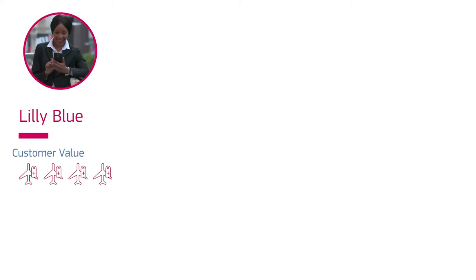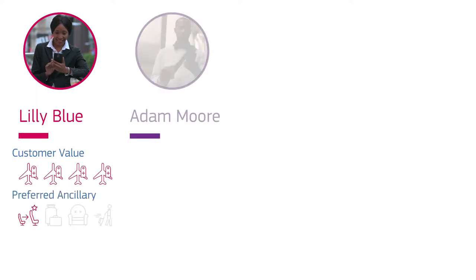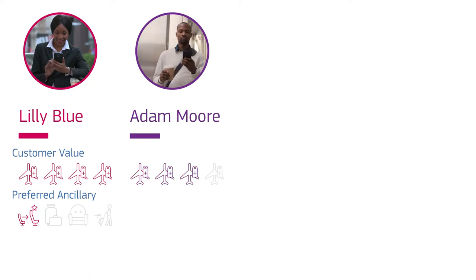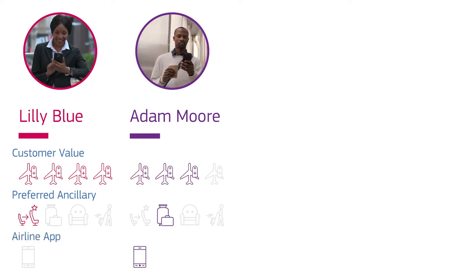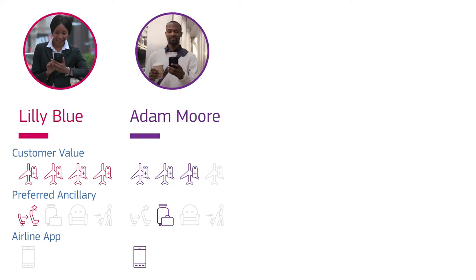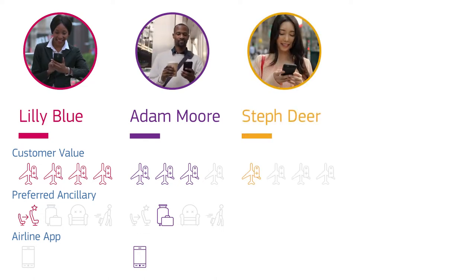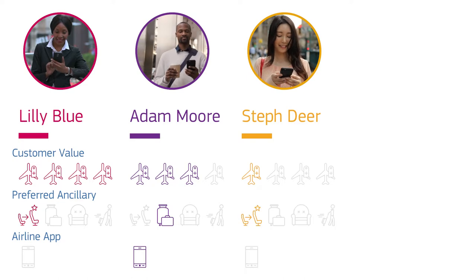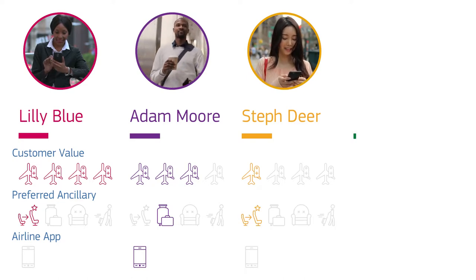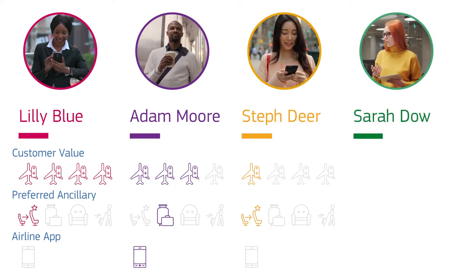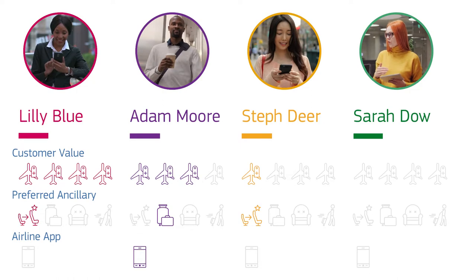Our first persona is Lily Blue. She is well known by Horizon Airlines on account of her frequent travel, and she often buys an upgraded seat. Second is Adam Moore, another frequent traveller and user of the Horizon app, who often travels with an extra bag or two. Third is Steph Deer, who has only travelled once with Horizon and bought a seat with extra legroom. Last is Sarah Dow, who has never bought a flight with Horizon.